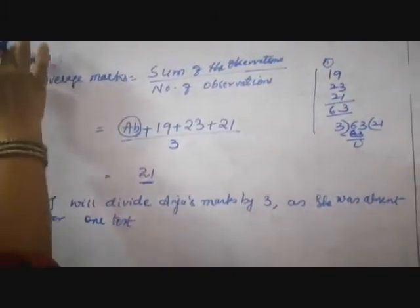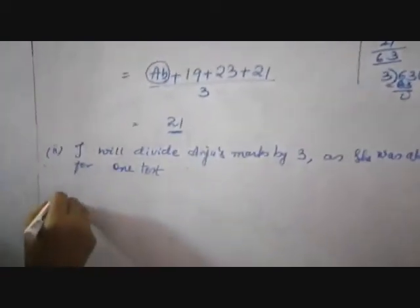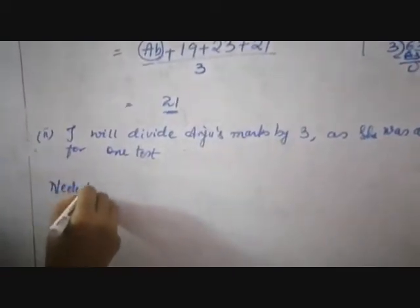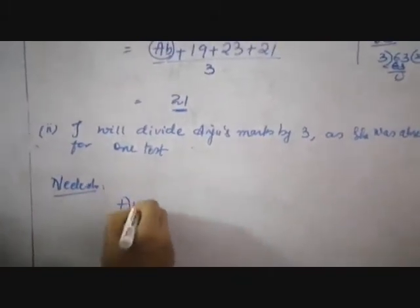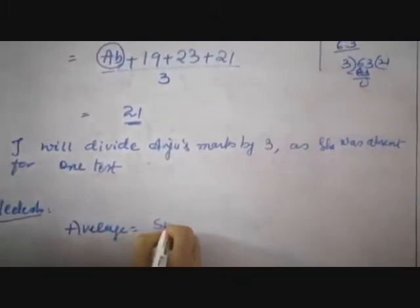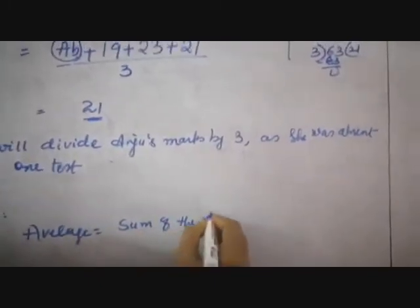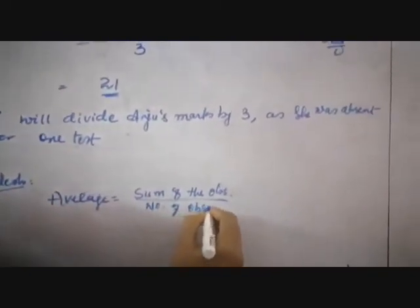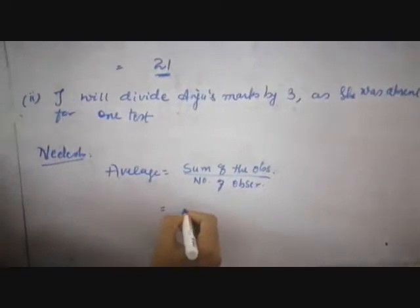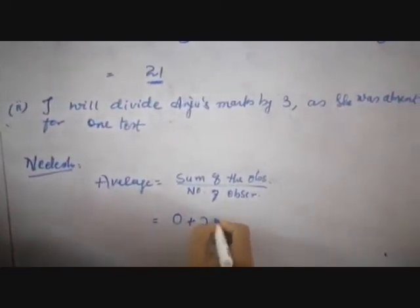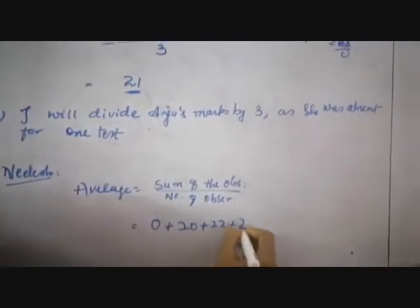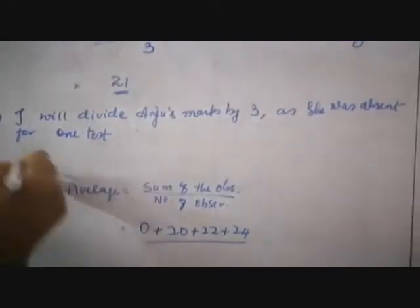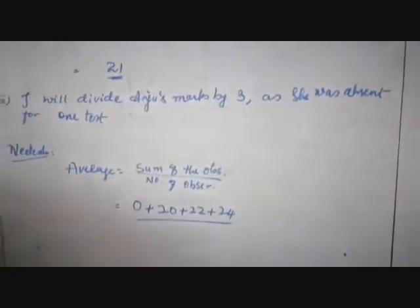Now he is asking the second one — average of Nilesh. First write the name of Nilesh. Average marks of Nilesh is equal to sum of the observations by number of observations. Unit test 1: 0 marks, unit test 2: 20 marks, unit test 3: 22 marks, unit test 4: 24. Will you divide the total marks by 3 or by 4?